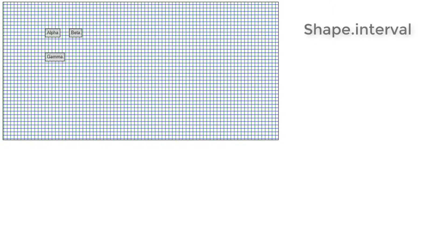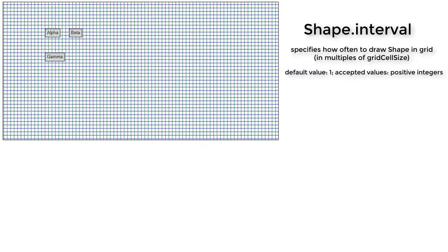How did the panel know how often to draw the horizontal and vertical line shapes? It observed the shape.interval property, which is a positive integer that specifies how often to draw this line shape in the grid. Since we did not set the interval property for either shape in our panel, it used the default value of 1. So, every 10 pixels — either horizontally or vertically — a line is drawn, since the grid.gridCellSize is 10 by 10.